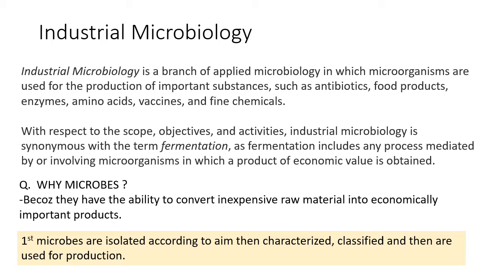For example, if you want to produce a particular antibiotic, you start by screening for microbes able to produce that antibiotic. You test whether it can produce it through extraction and downstream processes, check the quantity the microbe can produce, then do lab-scale experiments and start upscaling — increasing the volume of fermentation to increase yield — and then go for large-scale production if everything goes well.